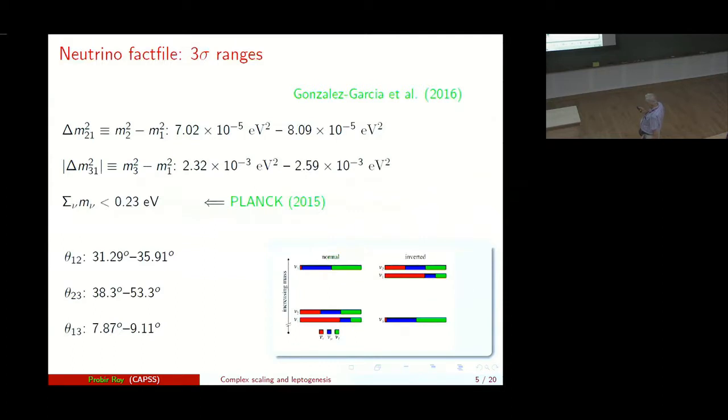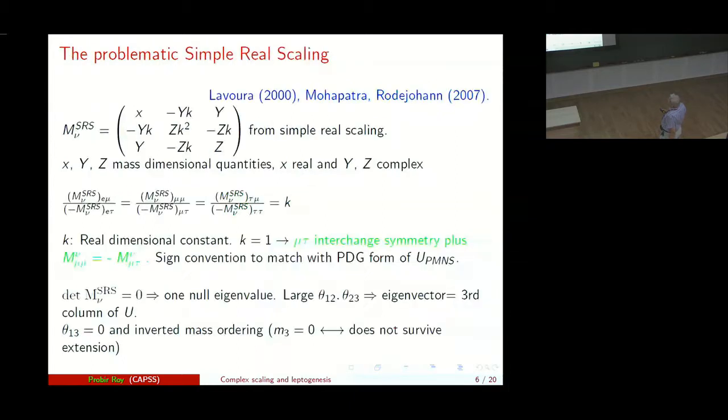Okay, let me now open the neutrino fact file. We have the latest summarized neutrino mass square differences and the absolute value, the actual value for delta m_21 square and the absolute value for delta m_31 square. And the sum we take from Planck to less than 0.23 electron volt and these are the three sigma ranges of the mixing angles. So if you have a normal mass ordering for the light neutrinos, you have this kind of a situation. If you have an inverted one, you have that kind of a situation.